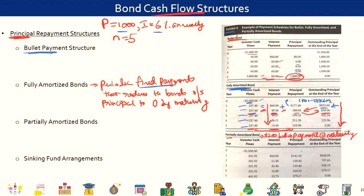As your outstanding principal keeps reducing, so will your six percent interest as a percentage of that lower outstanding principal. So this fixed payment, as time goes by, contributes more and more towards principal. In the first year you paid only 177.4 dollars as principal repayment, and in the final year you pay 223.96. This is a fully amortized bond — it reduces the bond's outstanding principal to zero by the maturity date.